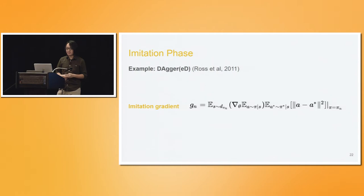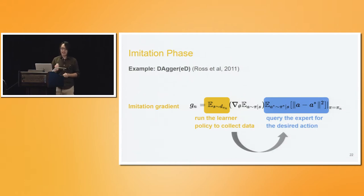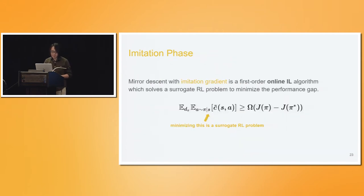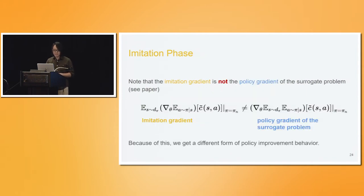A classical approach to computing this imitation gradient is DAgger. In this approach, the gradient is defined using delta-C as a squared loss. The way you do it is: run your learner's policy in the environment, observe a bunch of states, query the expert for the right action to take in every state, define this loss function, and obtain the on-policy imitation gradient. This is different from behavior cloning, where the state distribution is visited by the expert — here it's on-policy. Coupling mirror descent with the imitation gradient gives a powerful first-order online imitation algorithm that solves a surrogate RL problem defined by placing delta-C as the instantaneous cost. Interestingly, the imitation gradient is not the policy gradient of this new surrogate problem — they are just different — and because of this, the imitation gradient takes a more aggressive step to learn the policy, leading to different policy improvement behavior.